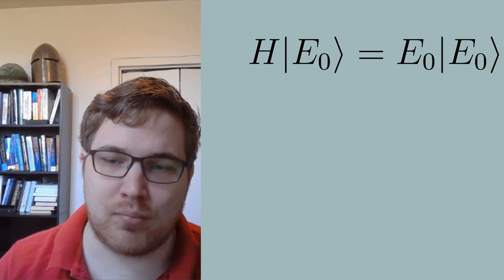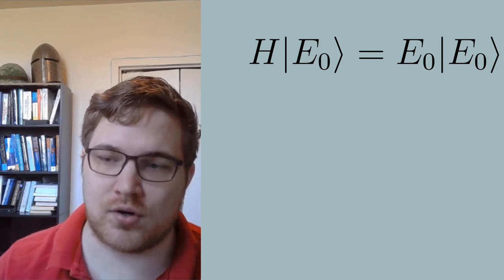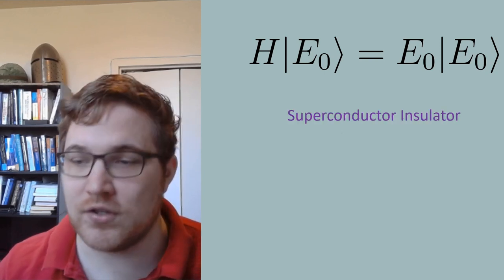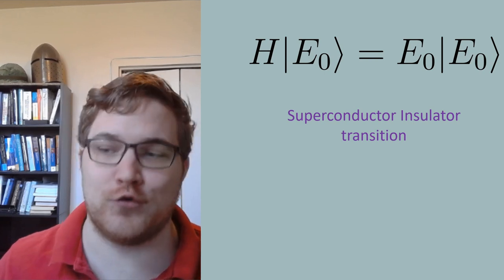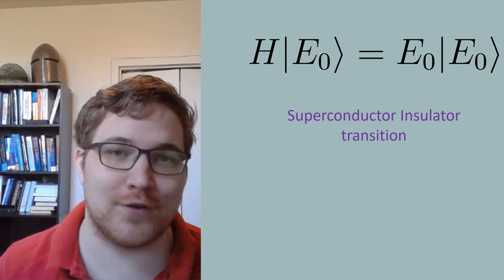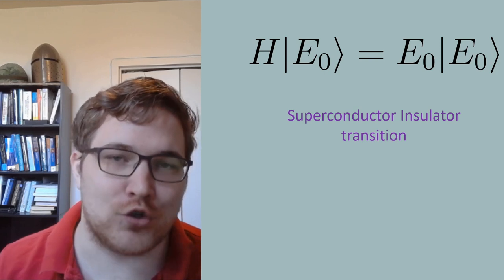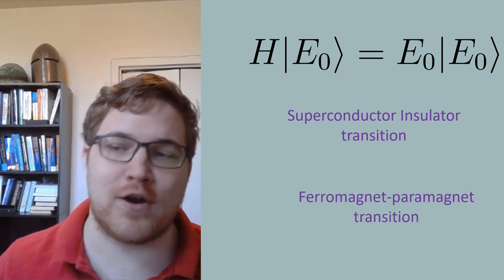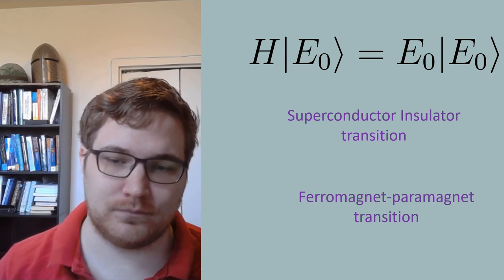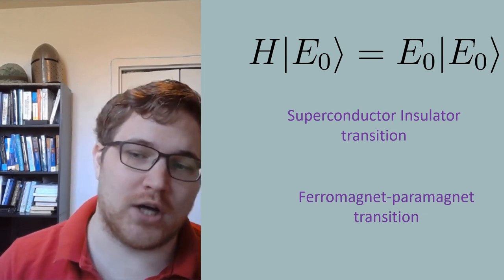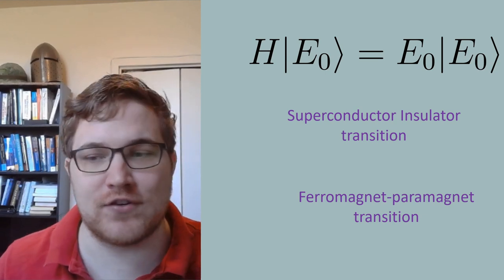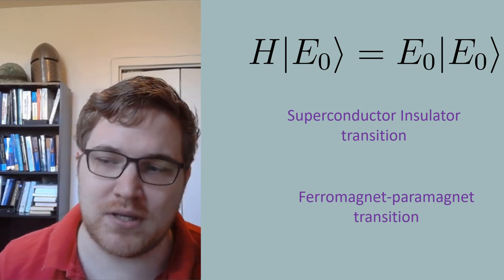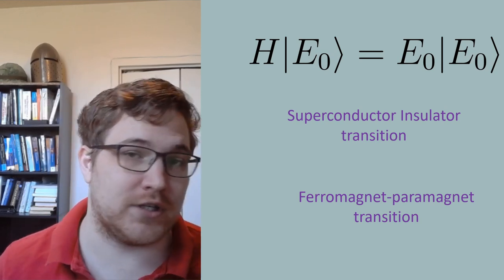Popular examples of these transitions are the superconductor to insulator transition, which is quite the dramatic change in the behavior of the electrons. Or another example concerning magnetism would be the paramagnetic to ferromagnetic phase transition. This is of course a really hot topic as it presents phases of matter that could potentially be extremely useful for future technologies.